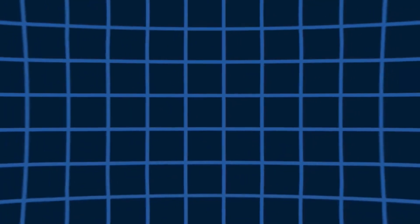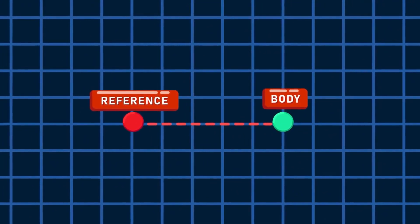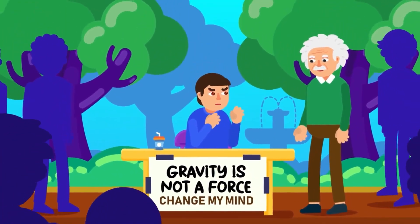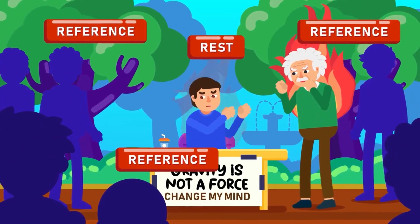What is rest? If a body does not change its position with respect to a reference frame, then the body is said to be in a state of rest. For example, if you are sitting on a bench by a busy road, you are in a state of rest with respect to the benches, bushes and the object nearby.